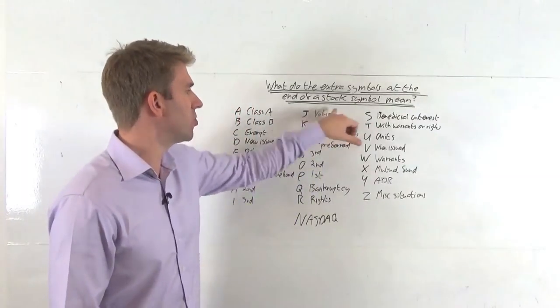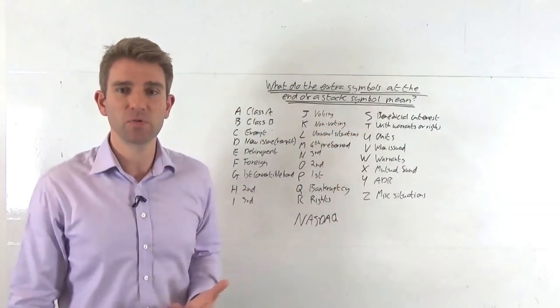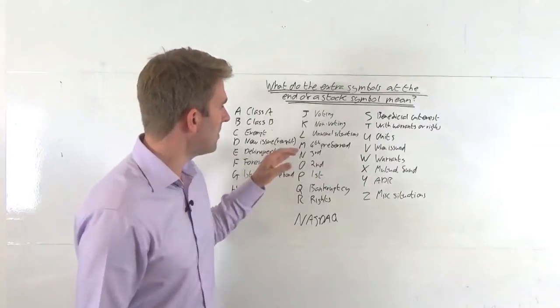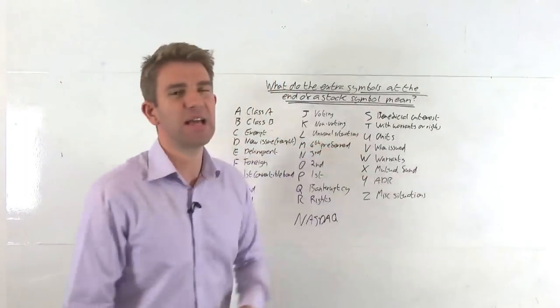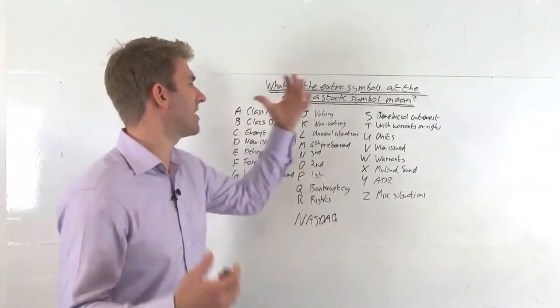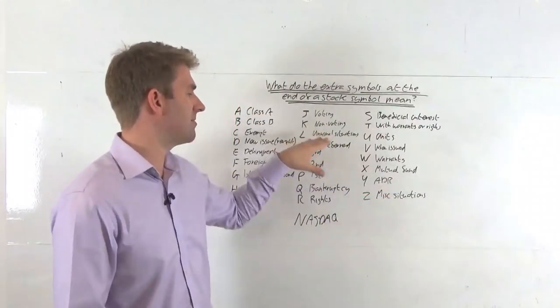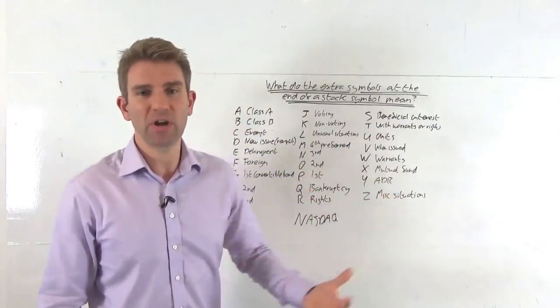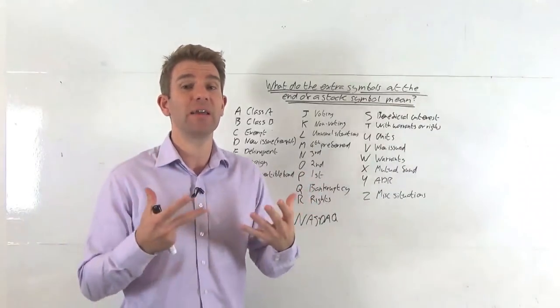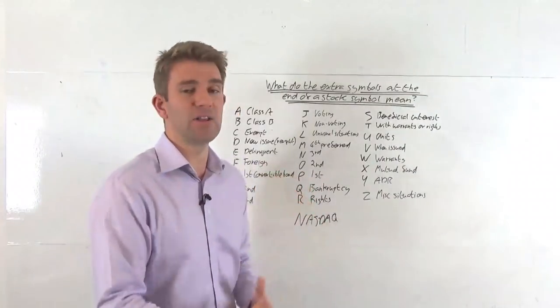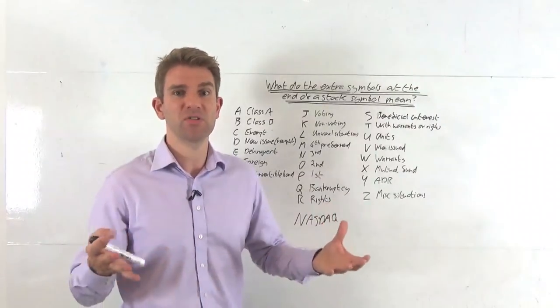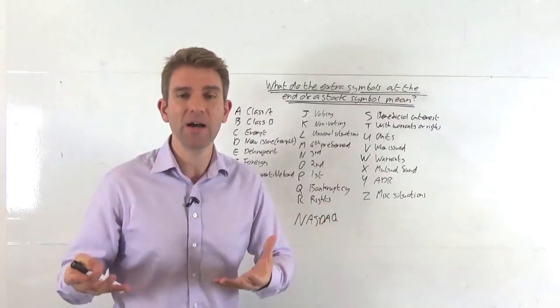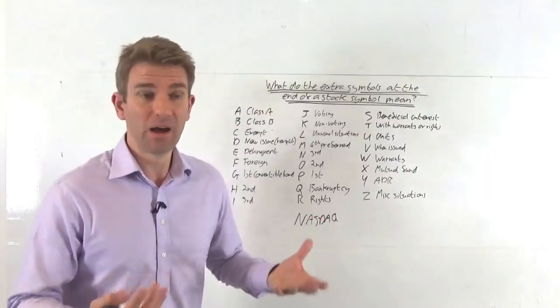J is a voting. K is non-voting to distinguish the difference between the two and the ownership. Then we've got unusual situations. Then miscellaneous situations that aren't designated here. Z is also the same miscellaneous situations, L and Z. So something unusual, you'd have to kind of dig and see exactly what that was. But it's just to highlight the fact that you're not just going to pile into it.